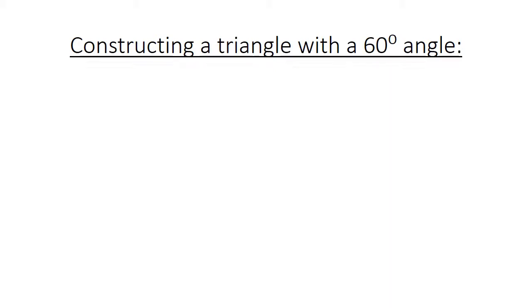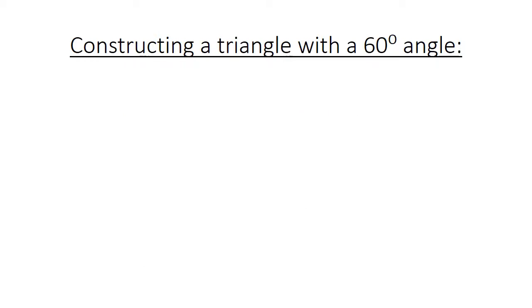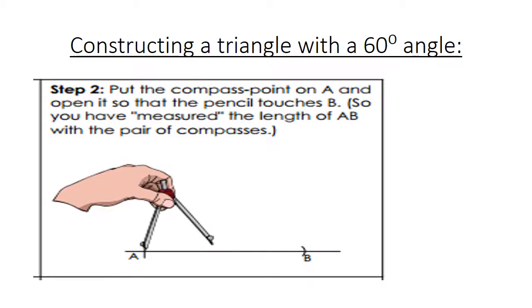Constructing a triangle with a 60 degree angle. First step 1. We draw a line, make a marking on it. Step 2. You put the compass point on A and open it so that the pencil touches B. So now you have measured the line of AB with the pair of compass.